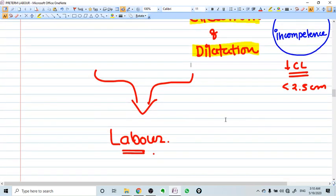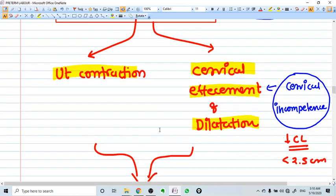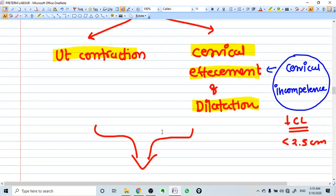This inflammation will lead to uterine contraction and cervical effacement and dilatation. This causes labor. Uterine contraction along with cervical effacement and dilatation causes labor. Cervical incompetence can also be the reason of cervical dilatation, premature cervical dilatation.